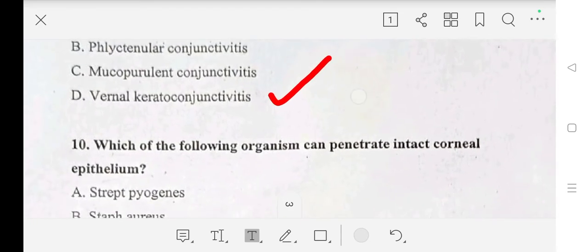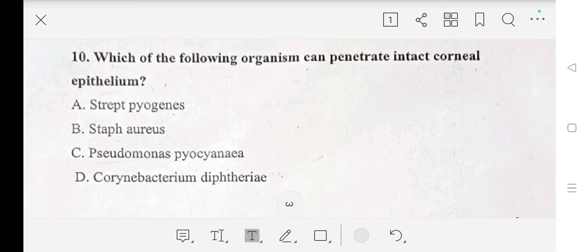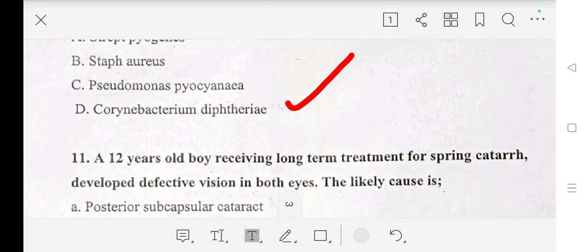Tenth question: which of the following organisms can penetrate intact corneal epithelium? Options are Streptococcus pyogenes, Staphylococcus, Pseudomonas aeruginosa, or Corynebacterium diphtheriae? Answer is Corynebacterium diphtheriae.